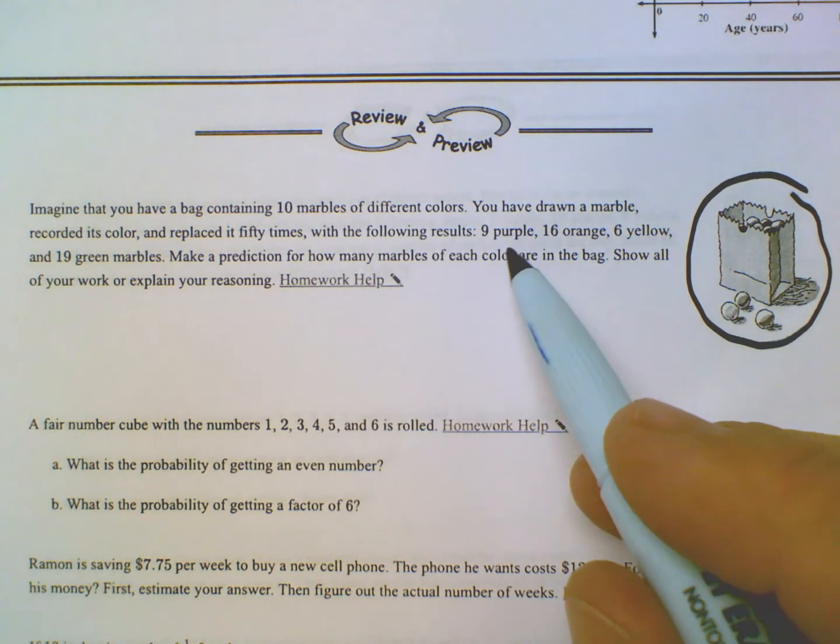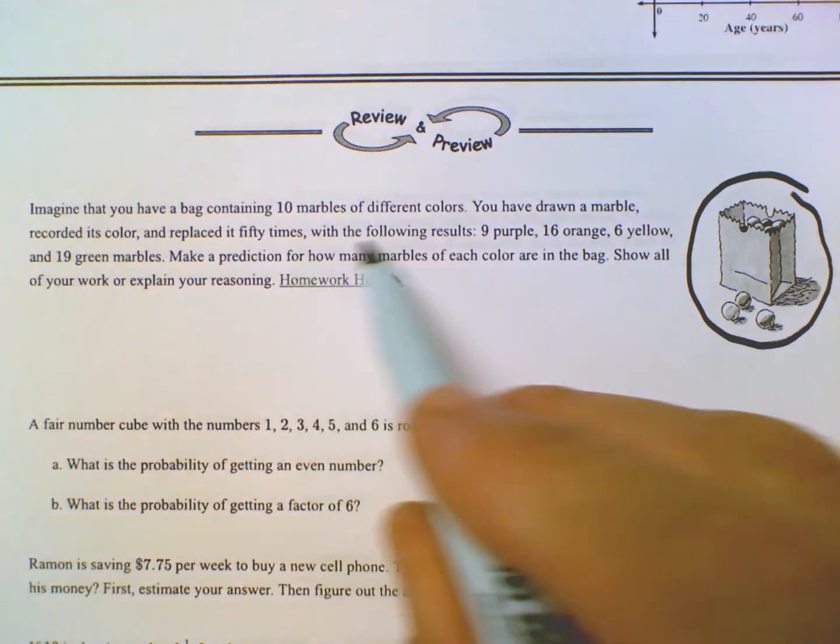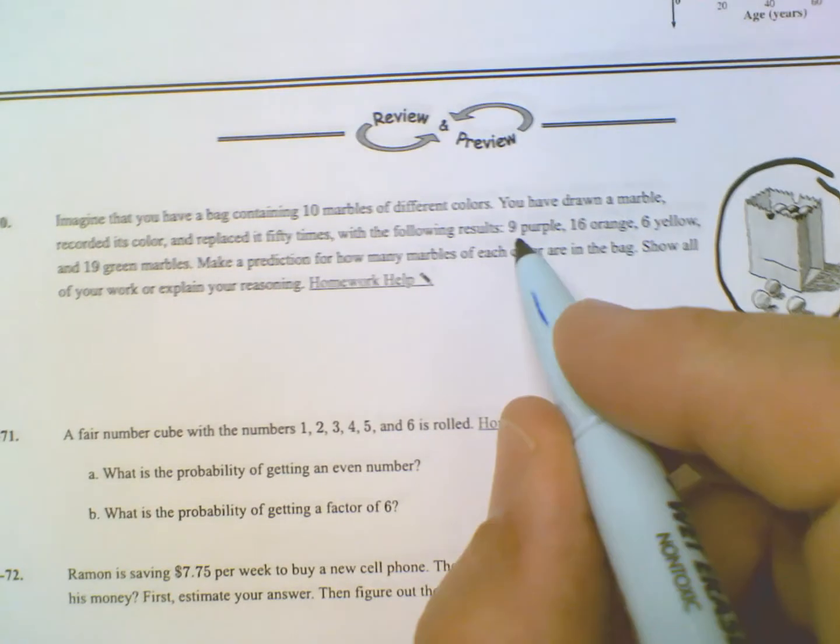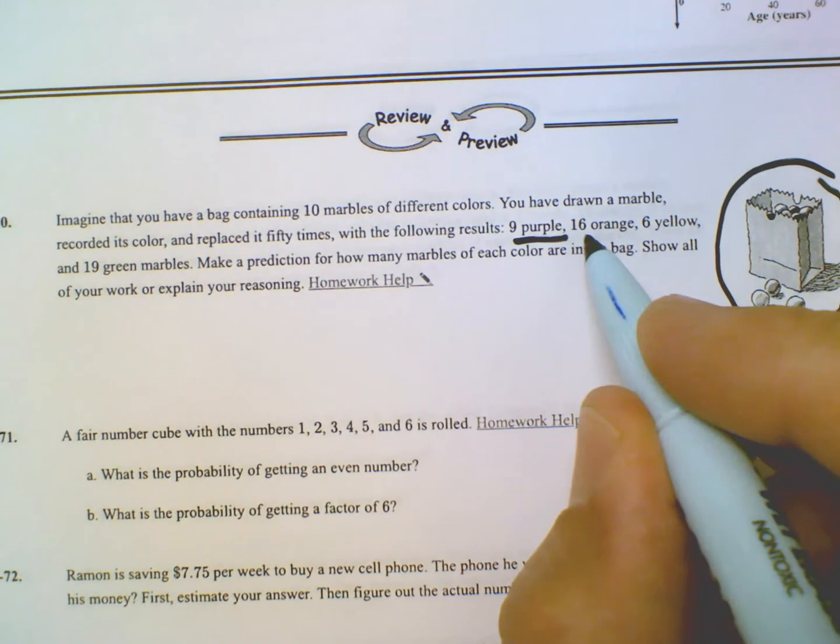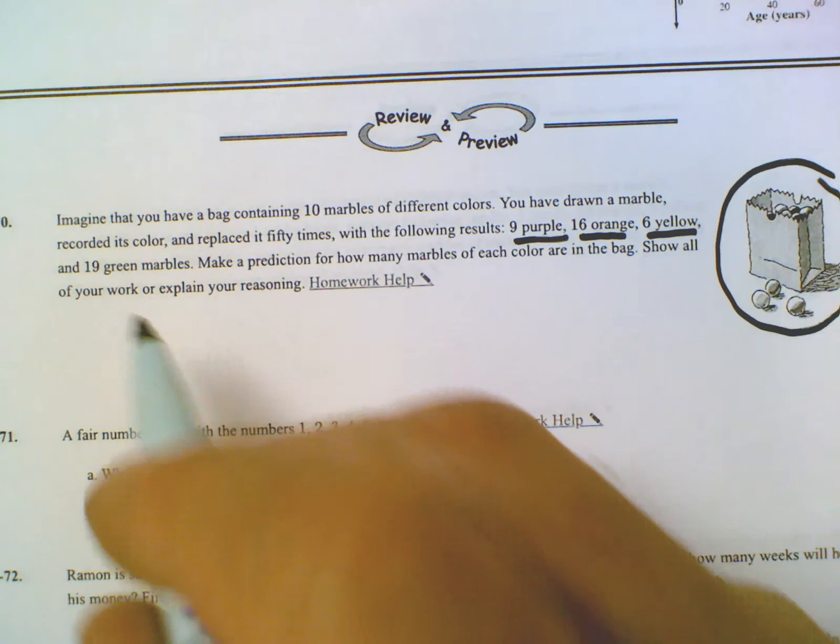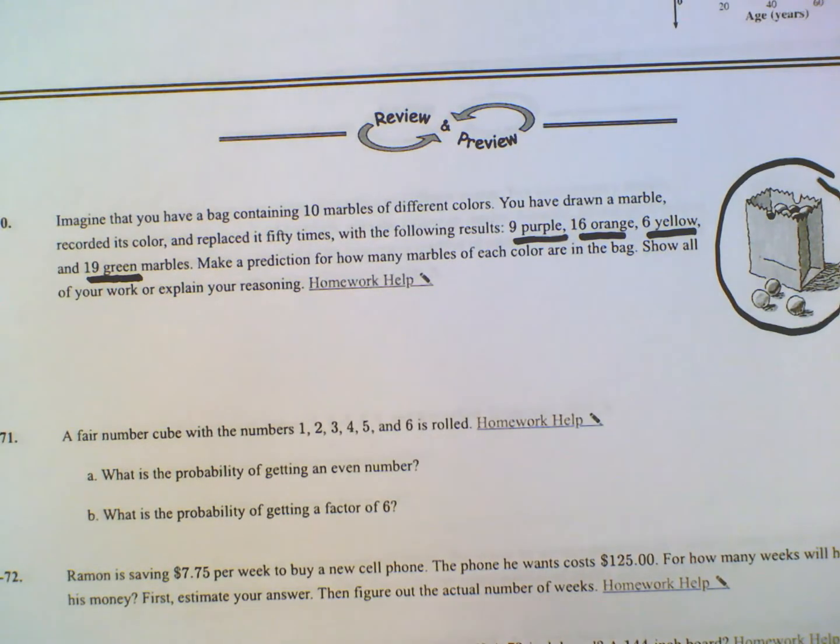We did an experiment and we kept pulling marbles out one at a time, and we did that 50 times and then we recorded the results. So here's the results: we ended up with 9 purple, 16 orange, 6 yellow, and 19 green. That was our results after doing it 50 times.